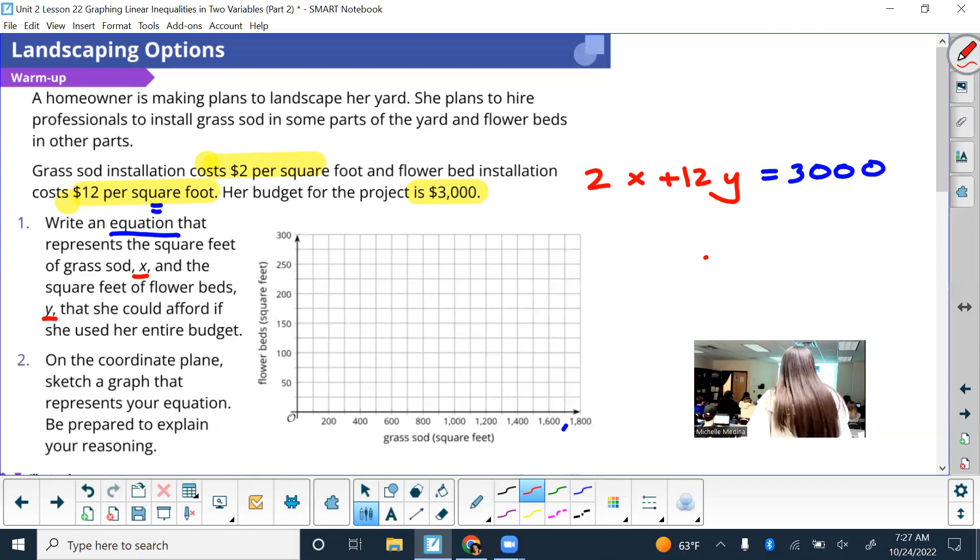And then you add them together because combined they give you up to three thousand dollars. And it's good that we use an equation for this because it specifically says if she can afford to use her entire budget. So that's why it's an equal sign versus an inequality.